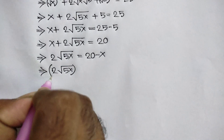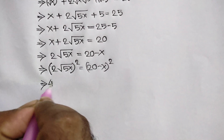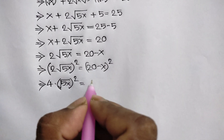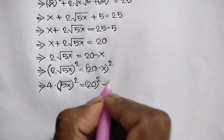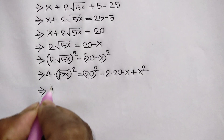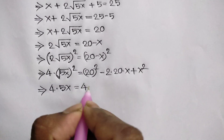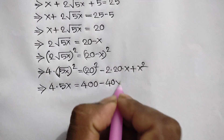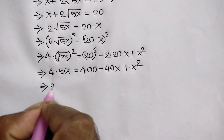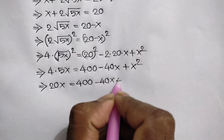2 times square root of 5x, whole square, is equal to 20 minus x, whole square. So 2 squared, that means 4, times 5x is equal to 400 minus 2 times 20 times x plus x squared, which gives 20x is equal to 400 minus 40x plus x squared.